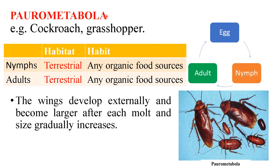The next one is parometabola. The examples are cockroach and grasshopper. They have three life stages: eggs, nymphs, and adult. Here you can see the adult of cockroach and the nymphs of cockroach. Both nymphs and adults share a similar habitat — the habitat is terrestrial — and they both have similar habits, meaning they eat similar food. The wing development is external and the insects become larger after each molt, with size gradually increasing. So it is also known as gradual metamorphosis.